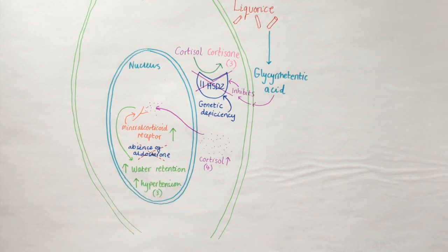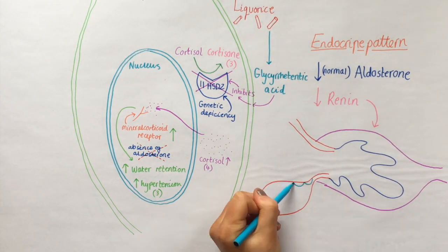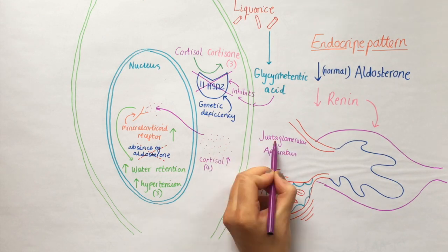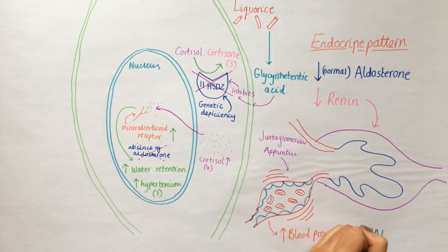The endocrine pattern of pseudo-hyperaldosteronism will have low aldosterone and low plasma renin activity because the kidney's juxtaglomerular apparatus detects the increase in blood pressure and slows down the RAS system as a negative feedback loop on renin.